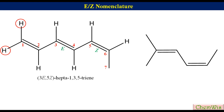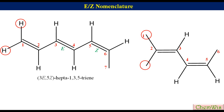Let's look at this diene. The alkenes are equidistant from each side, so numbering will start from the left because it gives the lower number to the carbon bearing the methyl group. The numbering is: 1, 2, 3, 4, 5 and 6. Put the hidden hydrogen atoms. The double bond between C2 and C3 doesn't qualify for E/Z nomenclature because the substituents on C2 are the same. The configuration of the C4-C5 double bond is Z because higher priority groups are on the same side. Thus the name is (Z)-2-methyl-hexa-2,4-diene.